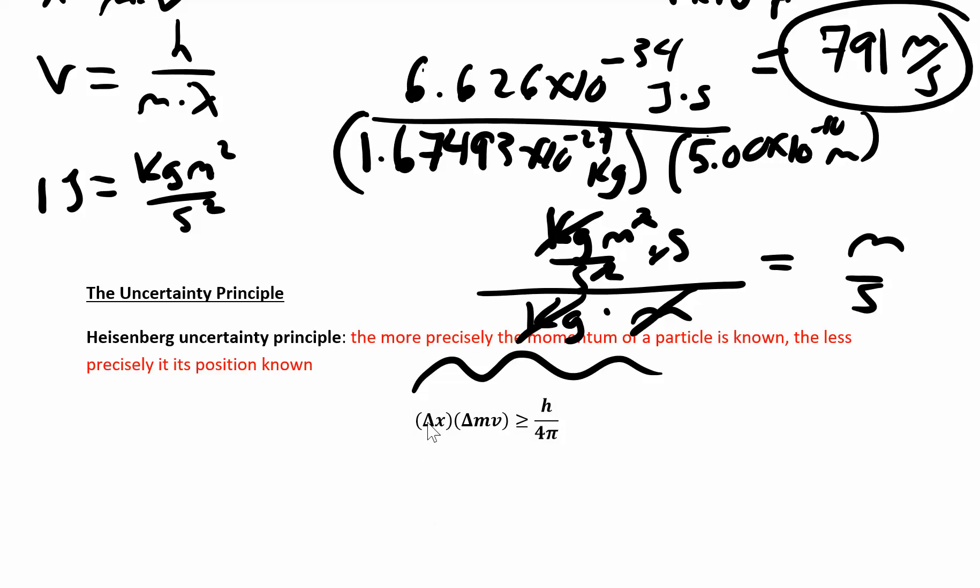This equation is just saying that the change in the location, the x, times the change in the momentum, that quantity has to be greater than this value. This is Planck's constant over 4 pi. You don't really have to worry about this equation very much. All you really need to know is that there's an inherent uncertainty in how well you can know both the momentum and the location.